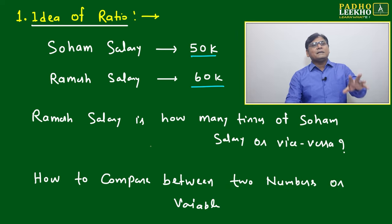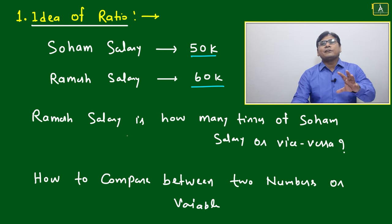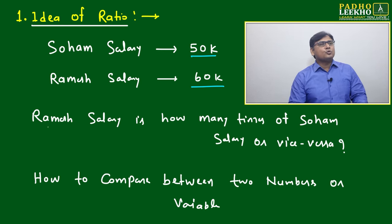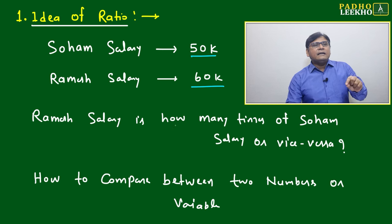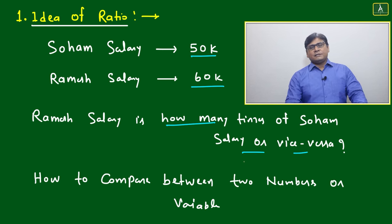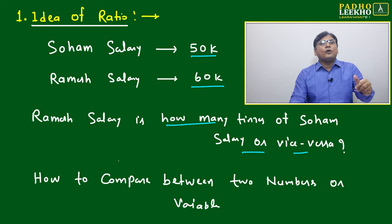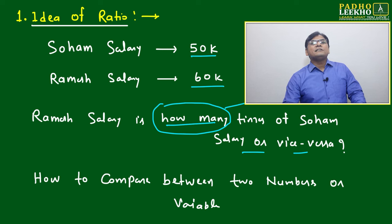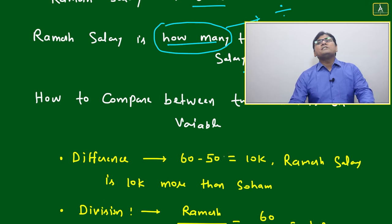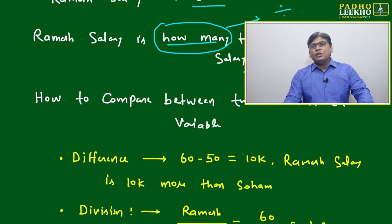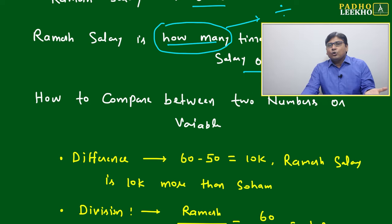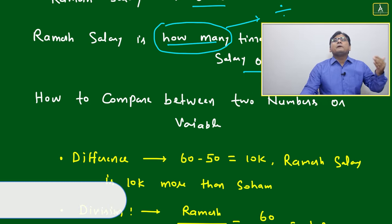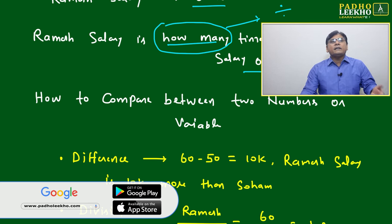We can express the salaries of Shoham and Ramesh in different ways. One way: Ramesh's salary is how many times Shoham's salary — whenever we use the phrase 'how many times,' the meaning is division. There are two best comparison tools: percentage and ratio. These are used to compare growth rate, performance, number of students, or any data.